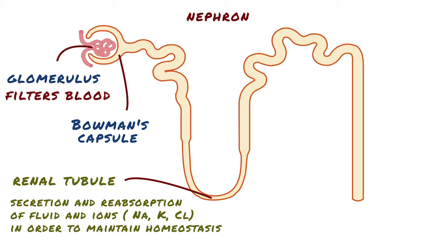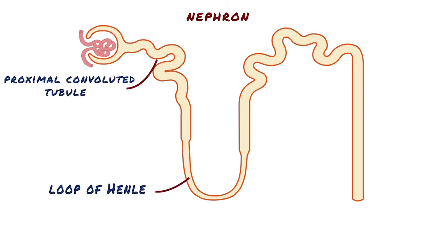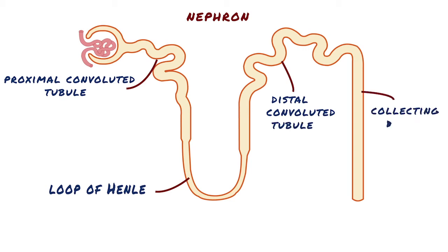The renal tubule has a few segments of its own: the proximal convoluted tubule, the U-shaped loop of Henle with a thin descending, a thin ascending, and a thick ascending limb, and finally the distal convoluted tubule, which empties into the collecting duct, which collects the urine.